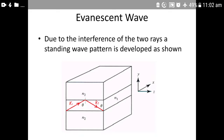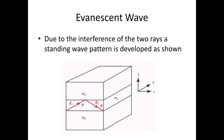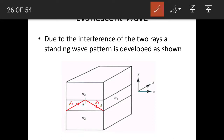We are going to discuss the evanescent wave. We consider a symmetrical dielectric slab waveguide. There are three layers in a symmetrical dielectric slab waveguide: the upper layer, represented by U, the central layer by C, and the bottom layer by B.